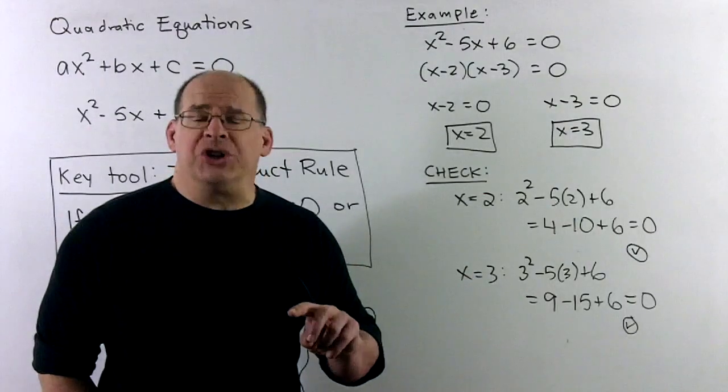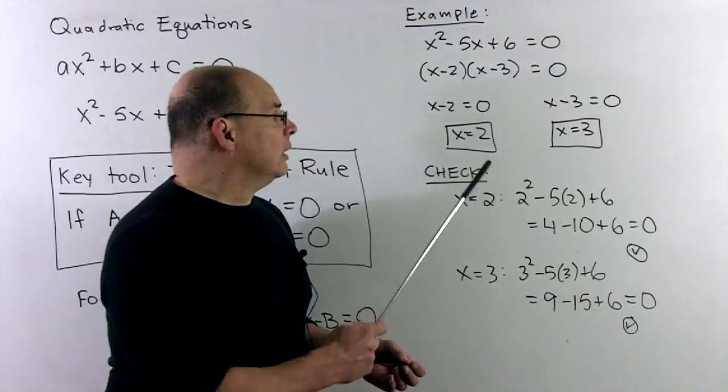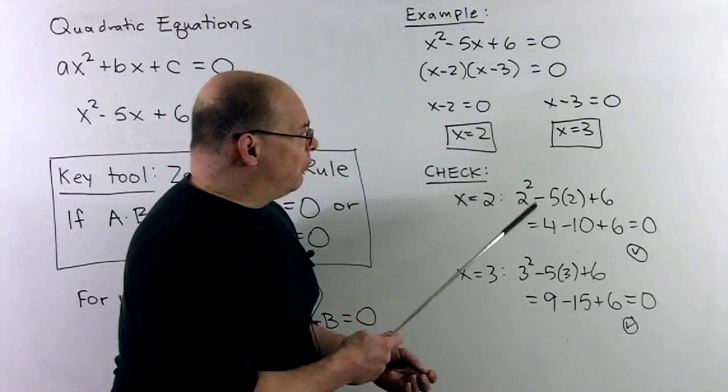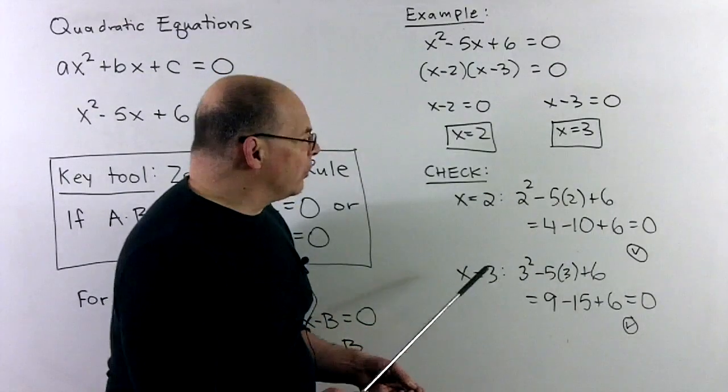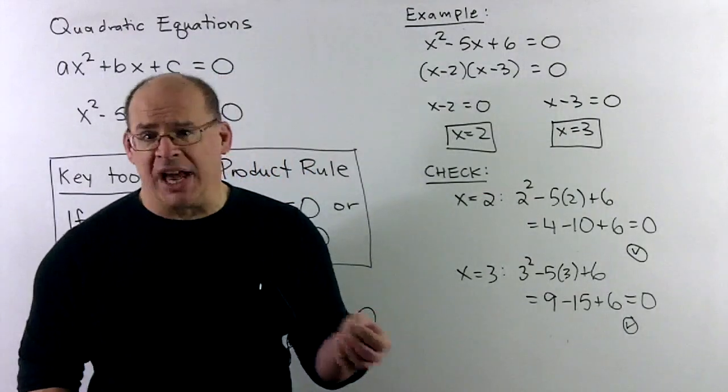Now, because we're solving an equation, we should always take our answers and go back to check our work. If we put 2 back in the original, we note I have 4 minus 10 plus 6 equal to zero, so that checks out. And then for 3, we get 9 minus 15 plus 6 equal to zero, and that checks out also.